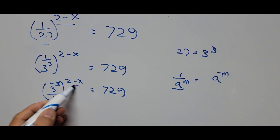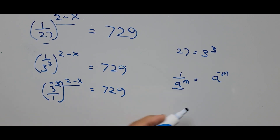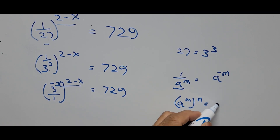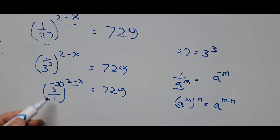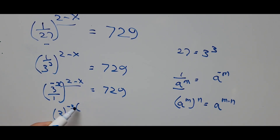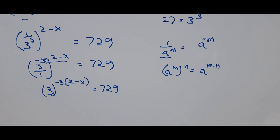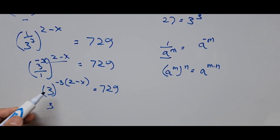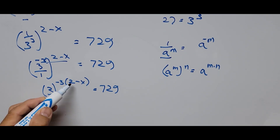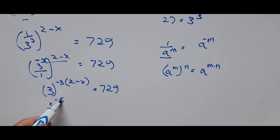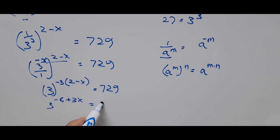From here, we'll be multiplying the exponents. Following the exponent rule: a raised to m raised to n equals a raised to m times n. Applying that here, this simplifies to 3 raised to negative 3 times (2 minus x) equals 729. Expanding the exponent: negative 3 times 2 is negative 6, and negative 3 times negative x is positive 3x. So we have 3 raised to (3x minus 6) equals 729.